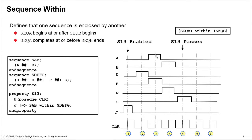Now this sequence A followed by B could start anywhere, so our sequence SAB here could have started at cycle two or cycle three as shown in this example or cycle four. Any of those would be a pass of the property S13.